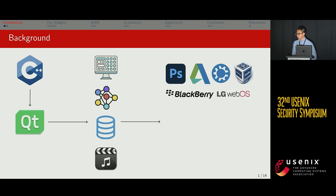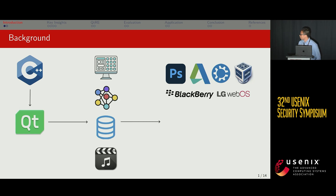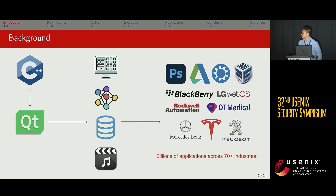With those libraries, Qt developers have produced numerous applications, such as desktop applications like Adobe Photoshop, Autodesk, KDE, or VirtualBox. Qt has also been seen on mobile operating systems like BlackBerry's OS and LG's WebOS for Smart TVs. Increasingly, Qt has been adopted by security-critical domains such as industrial automation, medical applications, and even automobiles like Tesla.